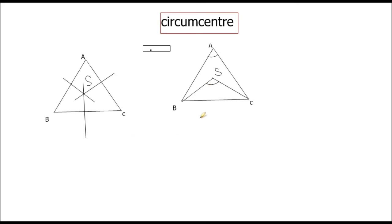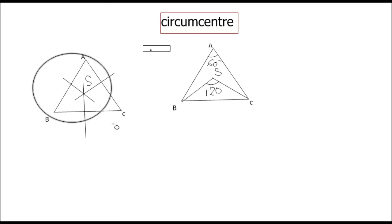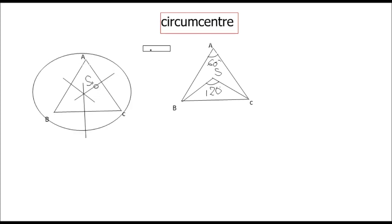The angle made by the circumcenter with the other two vertices is double the angle opposite to it. That is, angle BSC is double angle A. If angle A is 60 degrees, this angle is 120 degrees. The circumcenter is used to draw the circumcircle, which intersects the triangle at its three vertices.